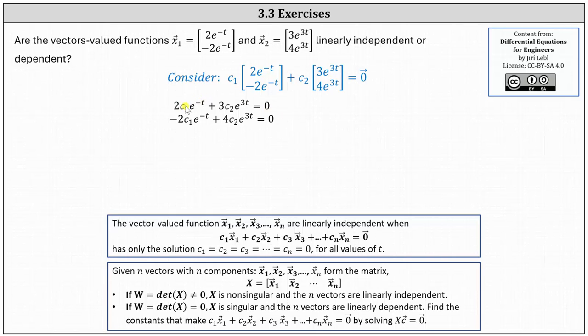Notice in this case if we add the two equations together the first two terms will simplify out, which gives us 7c2e^(3t) equals zero. e^(3t) is never equal to zero. This indicates that c2 must equal zero.